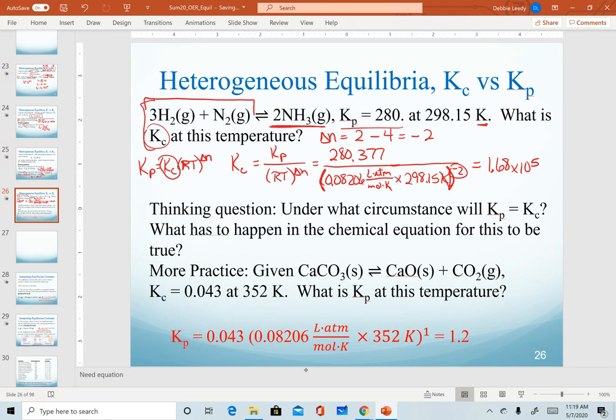Again, three sig figs and it is unitless. That is our Kc value. So recognize that Kp and Kc for a given equation do not have the same quantities.